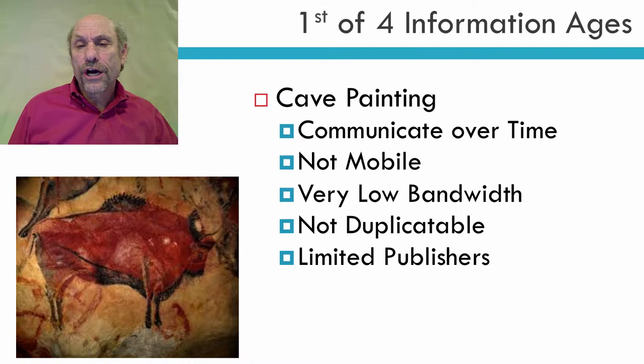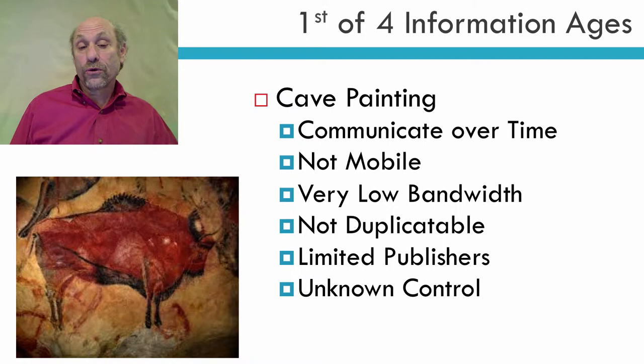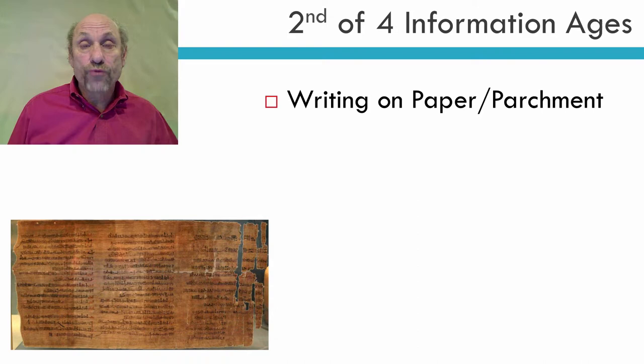And, of course, there are limited publishers. This is critical in terms of when we get to the fourth information age today, where you have a lot of publishers. Back then, you had very few publishers. And I don't know who controlled what was painted and why it was painted, so I'm just going to leave that as unknown for control. This control becomes more important as we move forward.